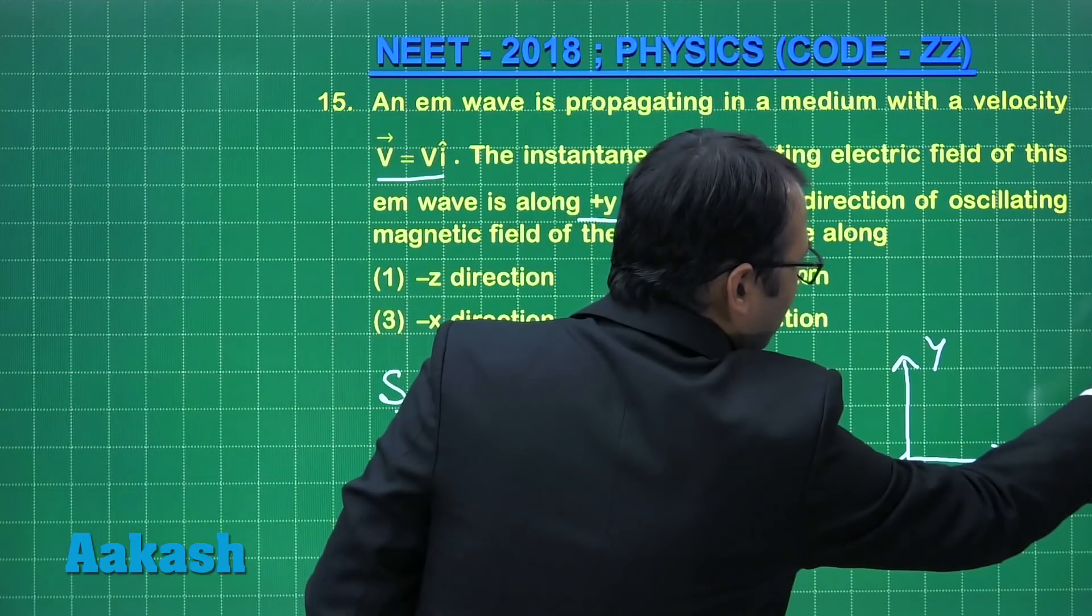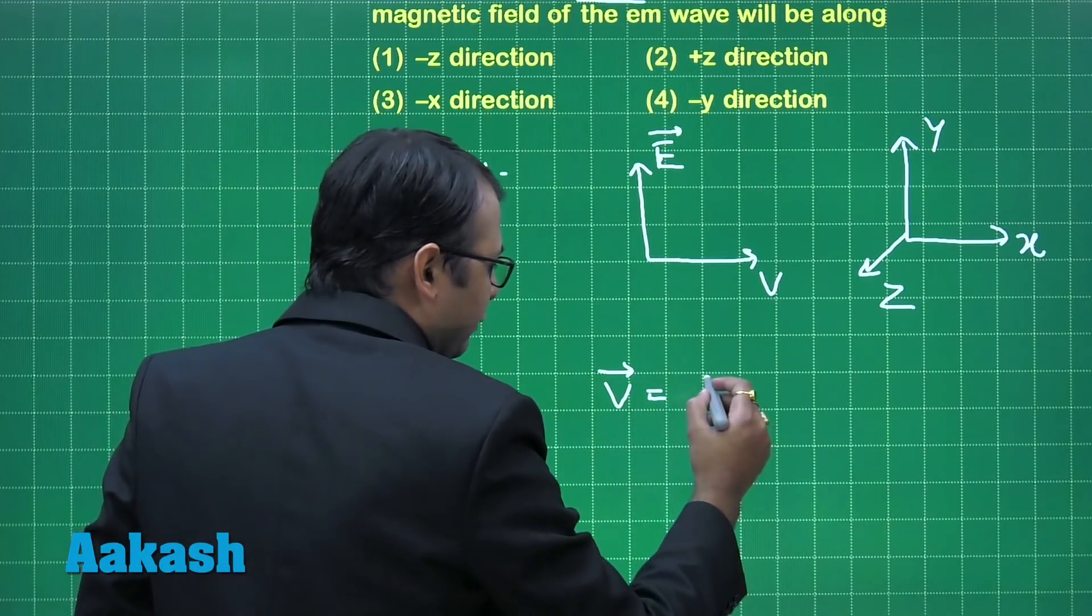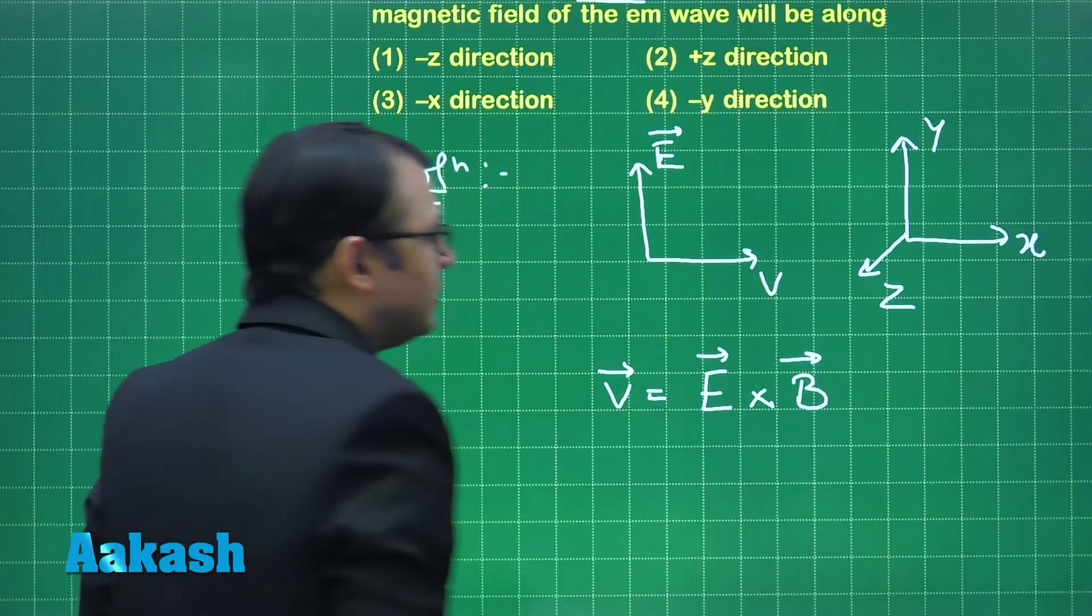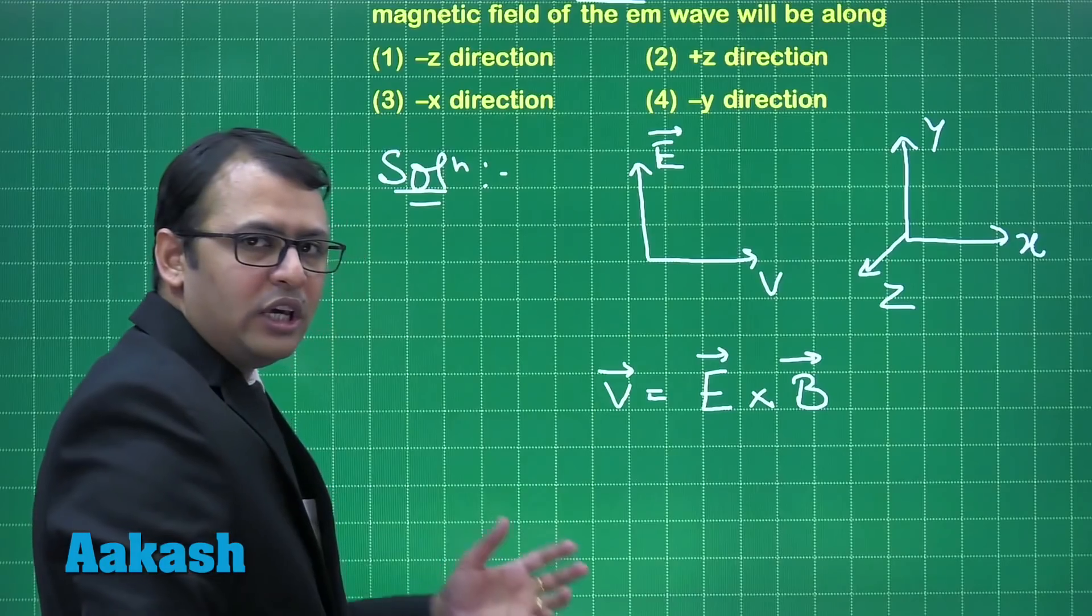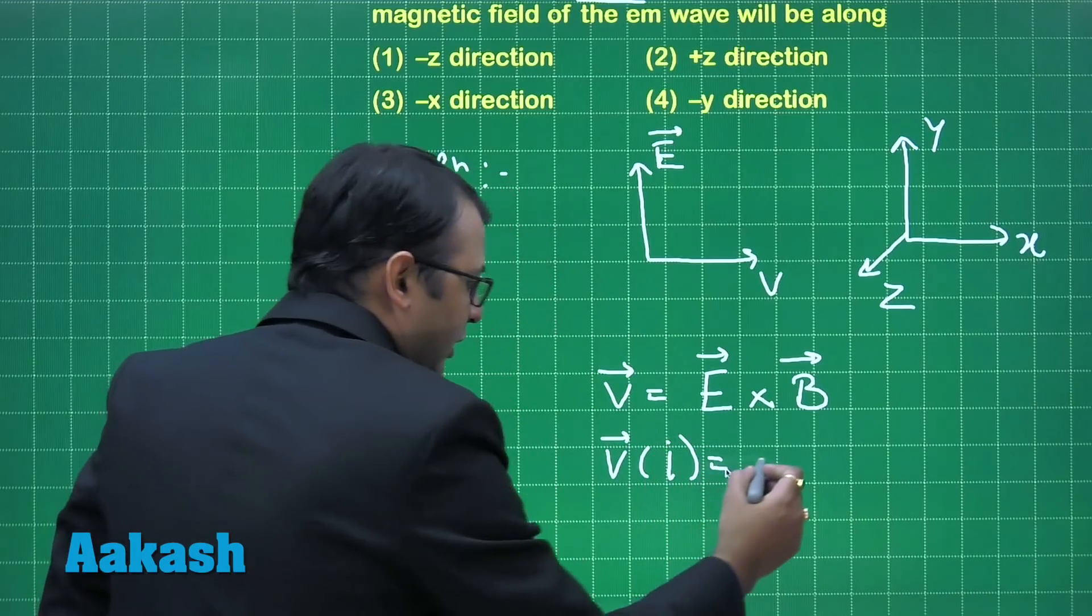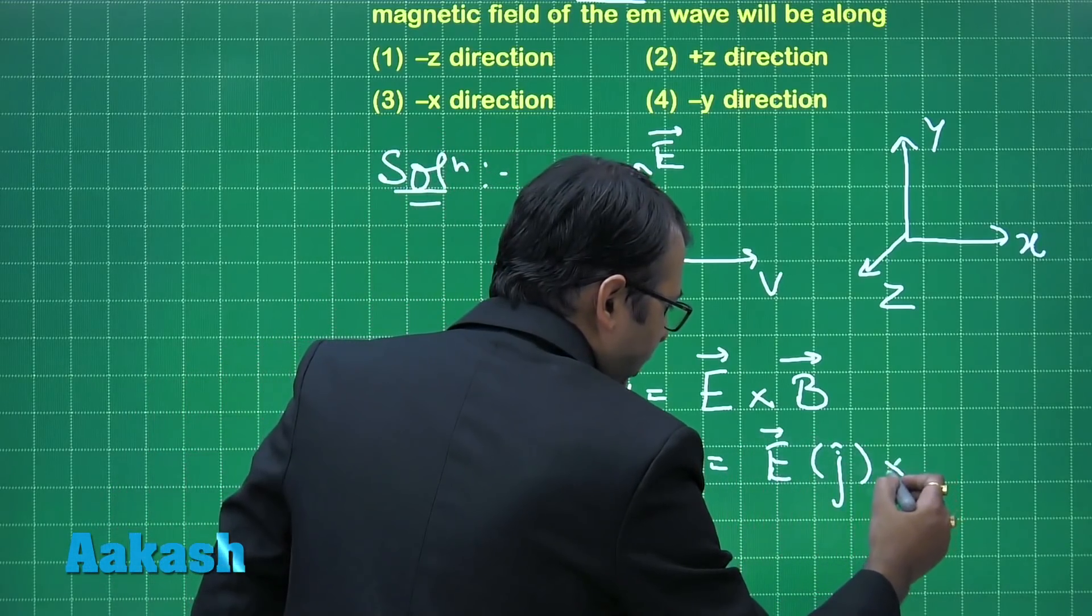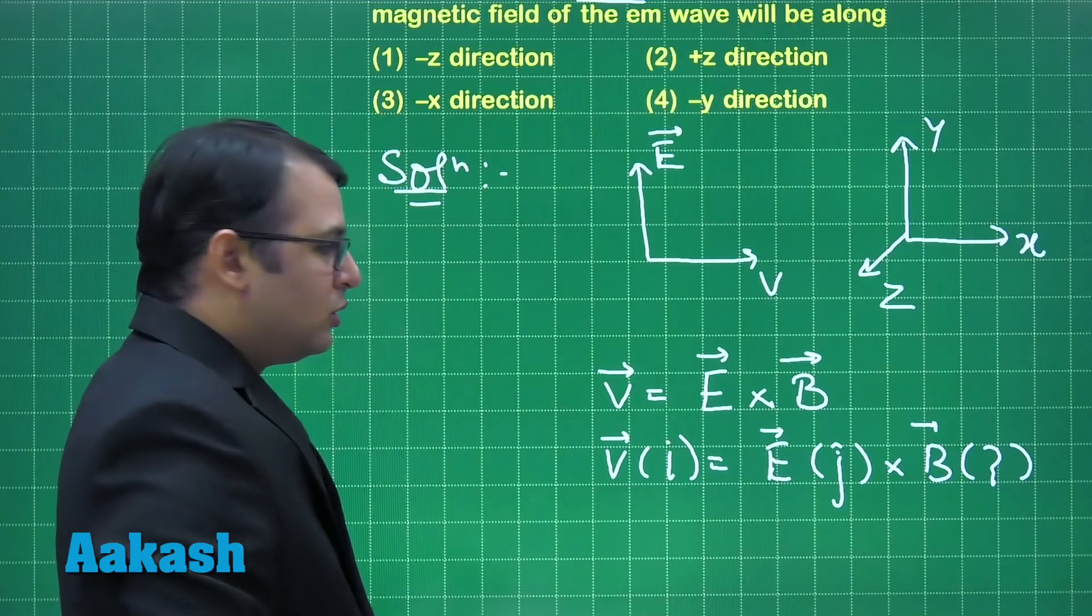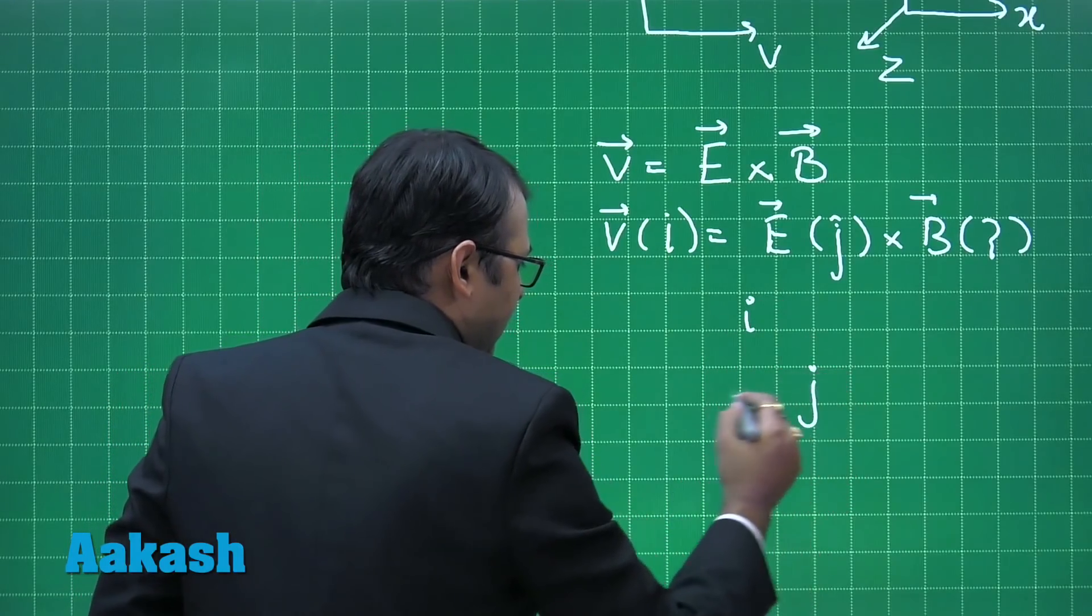Now as per the equation for velocity, we all know that velocity for an electromagnetic wave would be given by E vector cross B vector. That means E vector has to be cross multiplied with B. So velocity is along i cap, E vector is along j cap. Now B vector should be along what? That is the question. So if you want to see that i, j, k.